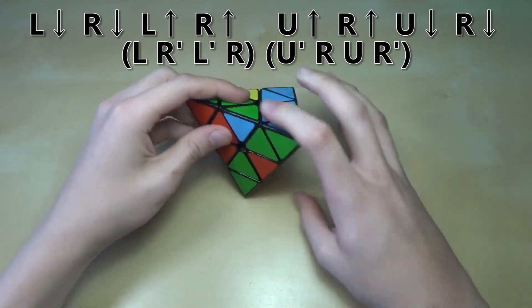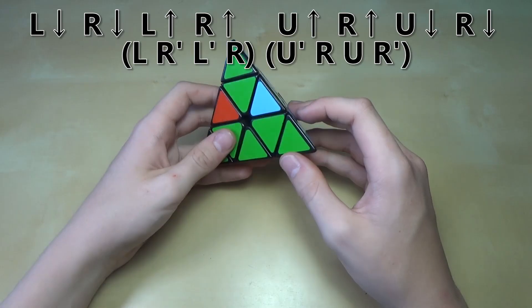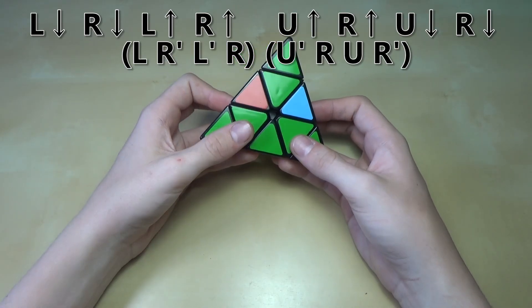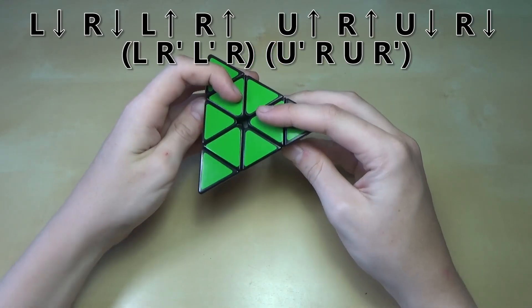So yeah, what that move will do is it will basically switch these two pieces. So once you get to that last step, you put the two pieces that need to be switched in the front. Do that algorithm. Again, it's this, this, up, up, up, up, down, down.